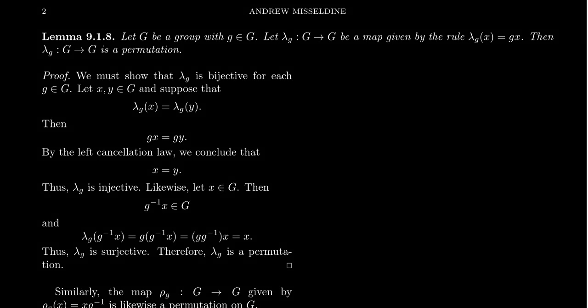In the previous video, we proved that every cyclic group is, up to isomorphism, determined by its order. There's only one cyclic group for every possible order you could consider, both finite and infinite.